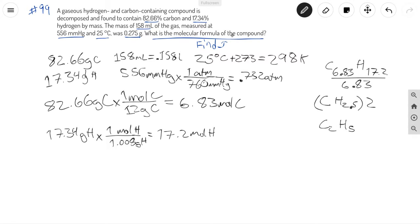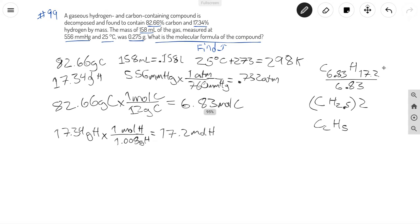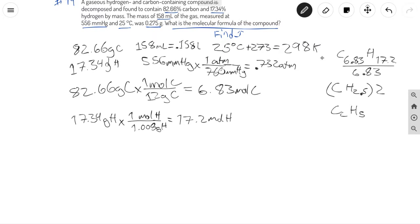But it's asking for the molecular formula of the compound. So let's go ahead and work at that. To find the molecular formula of the compound, we're going to use PV equals nRT.